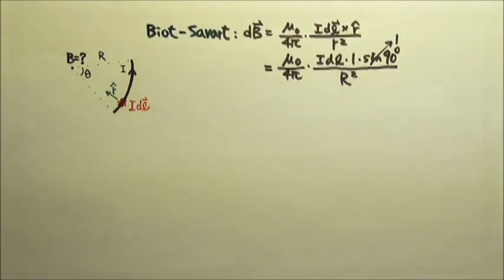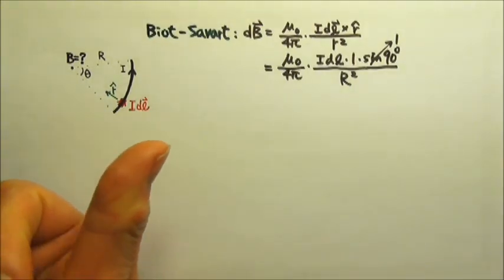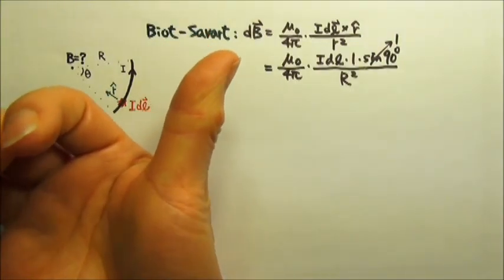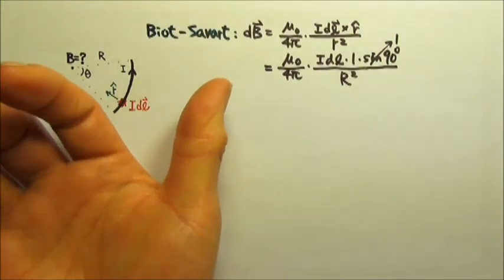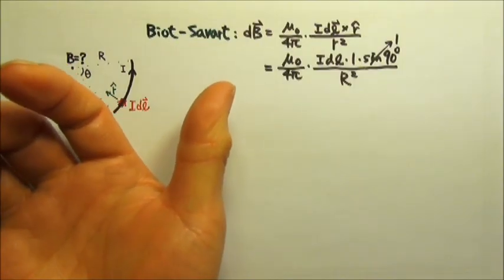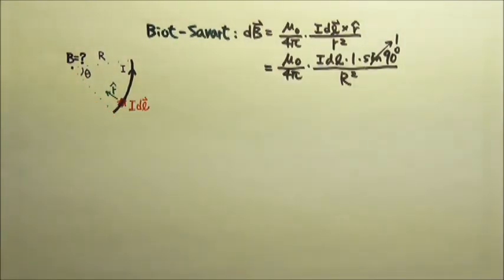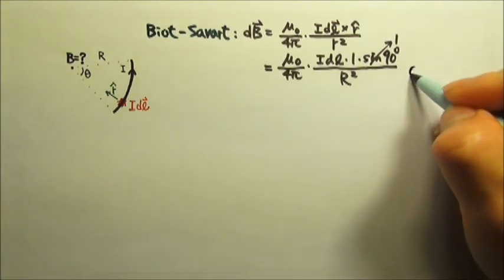dB is a vector so it has a direction. We can find its direction if we use this right hand rule. We use the thumb to follow the current and on that side we have the curved four fingers pointing out of the paper. So dB goes out of the paper.